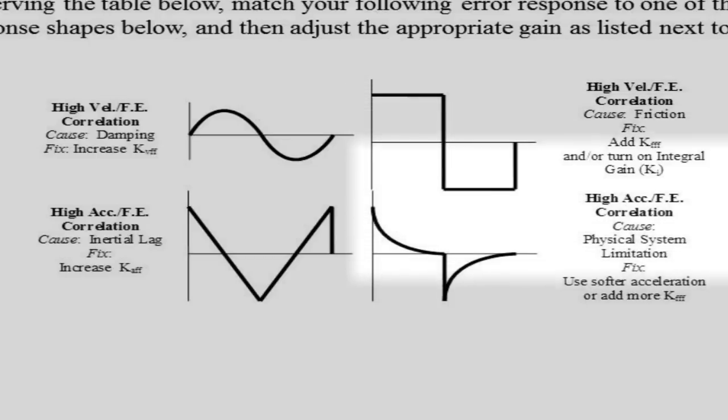The bottom right diagram shows a physical system limitation. In this case you are probably subjecting the motor to too strong of an acceleration for your system's capabilities, but you can also try adding kAFF to correct for this.